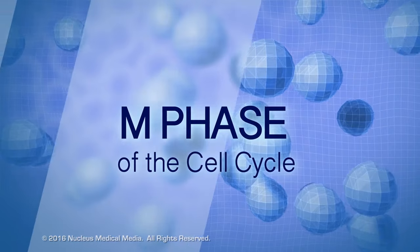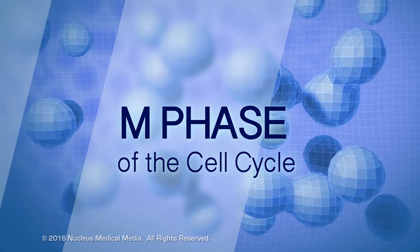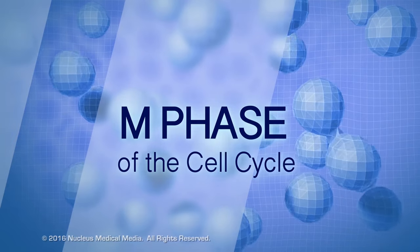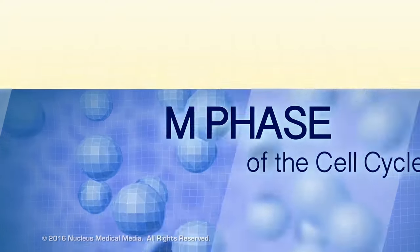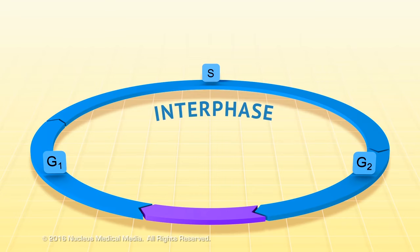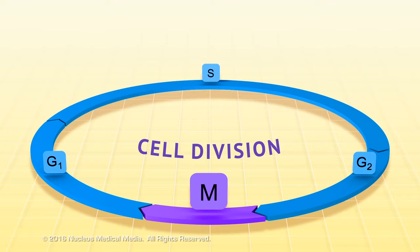In this lesson, we'll be exploring the M phase of the cell cycle, including mitosis and cytokinesis. Let's do a quick review of the cell cycle to see where they fit in. The G1, S, and G2 phases make up interphase, and the M phase represents cell division.